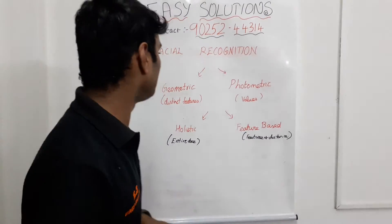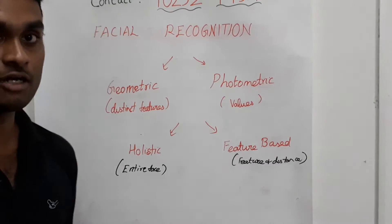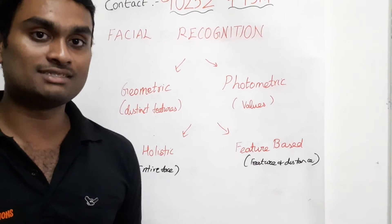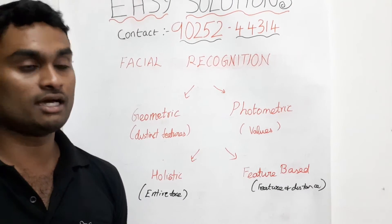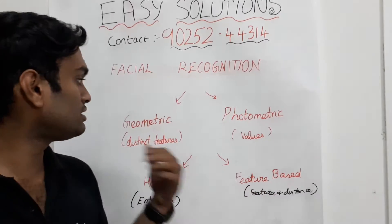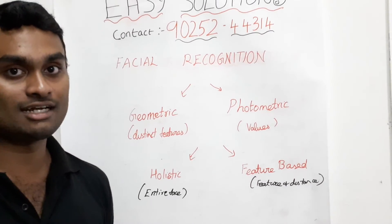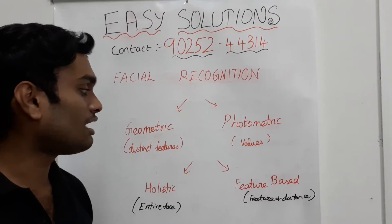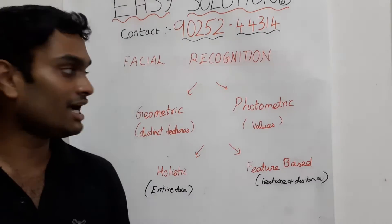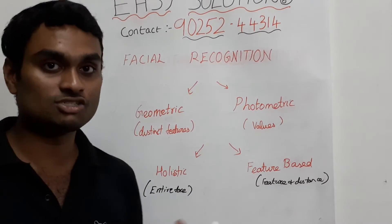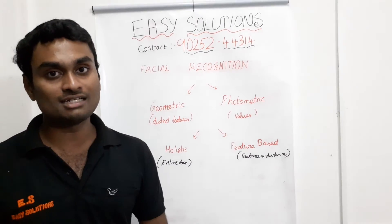Now let's talk about types. The first is the Geometric method, where we record the distance between features. In the Photometric method, we extract values from the total image and separate the values from each vector. This covers the entire image, facial features, various variables, geometry features, location, and distance.